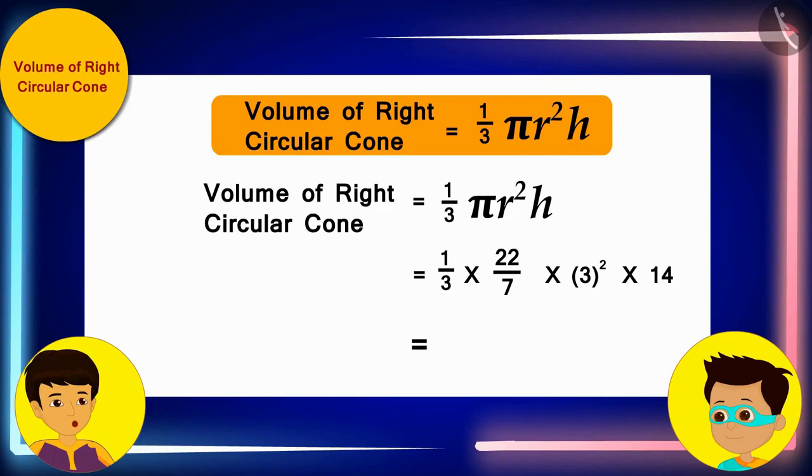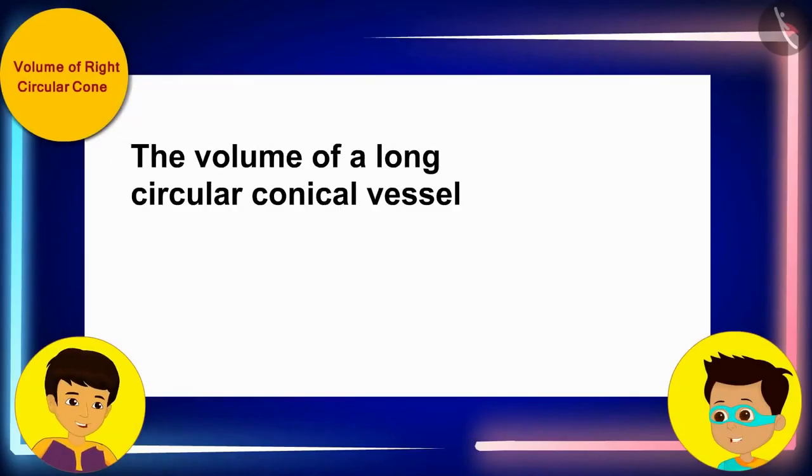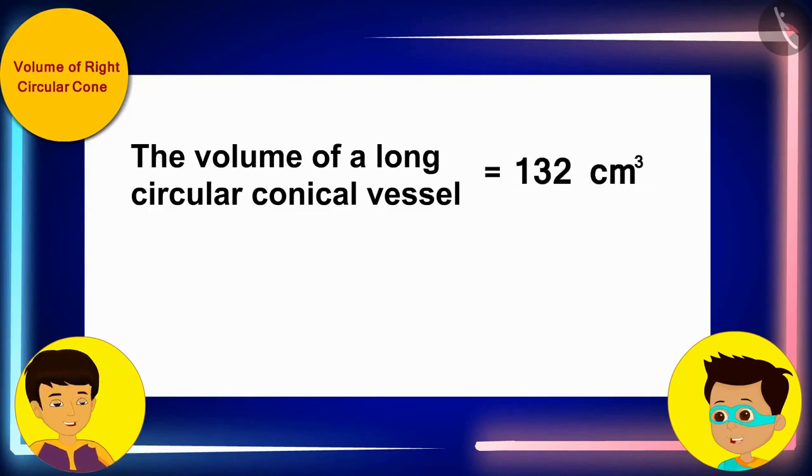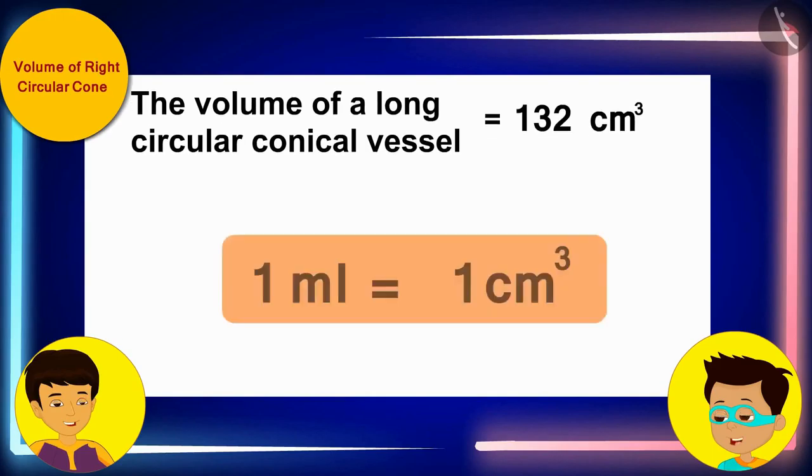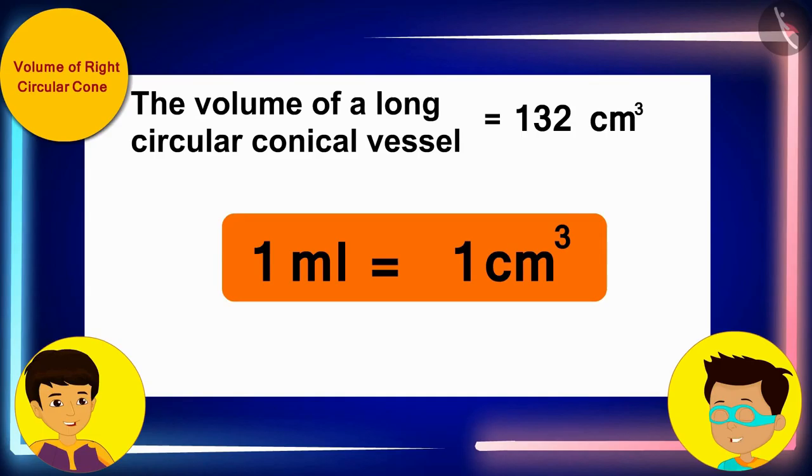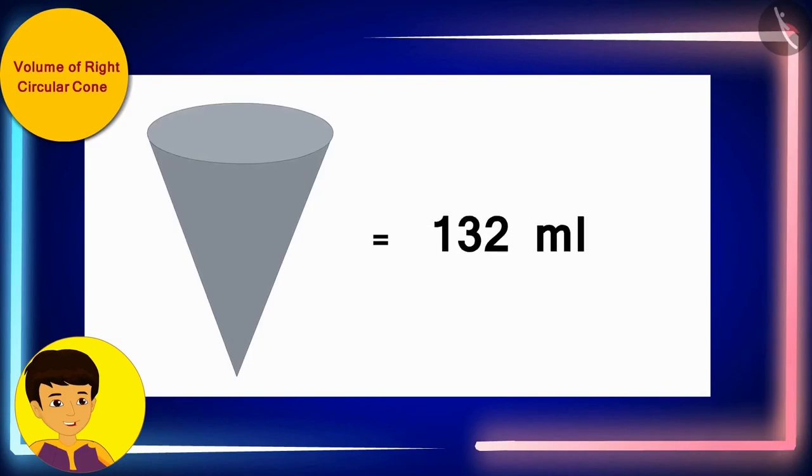Let us solve this by replacing the numbers at the places of r and h respectively. And then, we will know the volume of this right conical vessel. The volume of a right circular conical vessel is 132 cubic centimeters. And we know that 1 milliliter is equal to 1 cubic centimeter. Therefore, we can say that 132 milliliters of water can be filled in this right circular conical vessel.